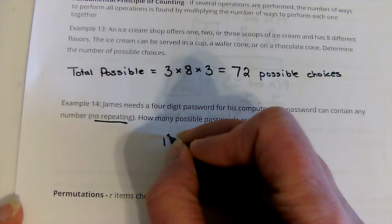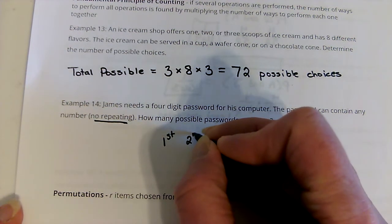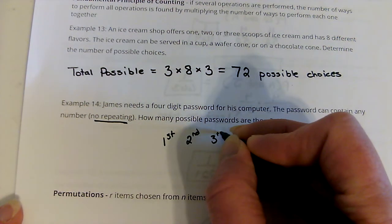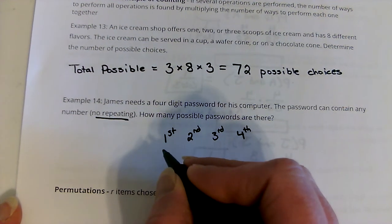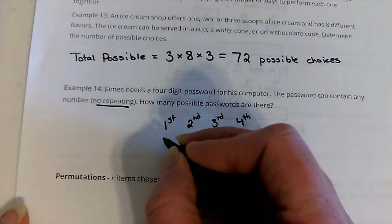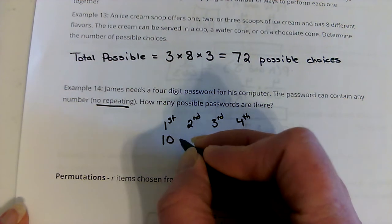How many possible passwords can he have? So we've got the first digit, the second digit, third, and fourth. For the first one, we've got all the numbers from zero to nine. That's ten digits.